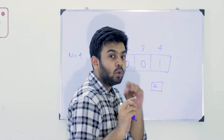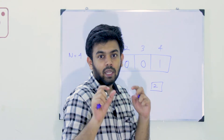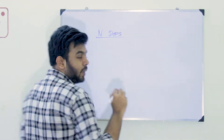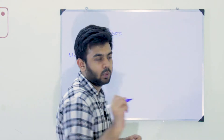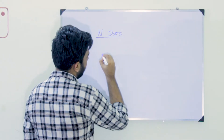I'm telling one example so that you will observe a pattern. Now let's take N equal to 9 - that means 9 doors.